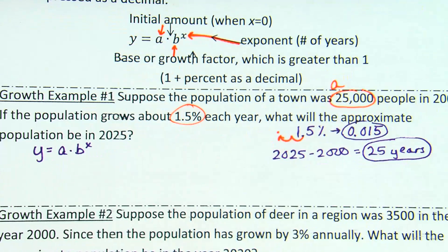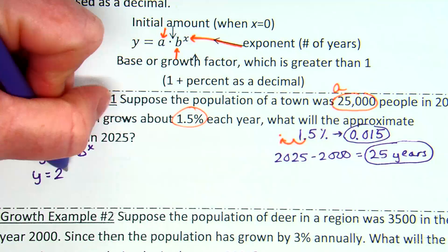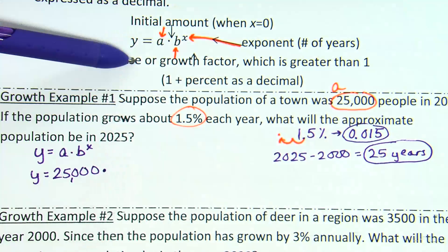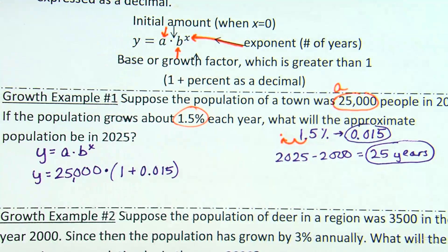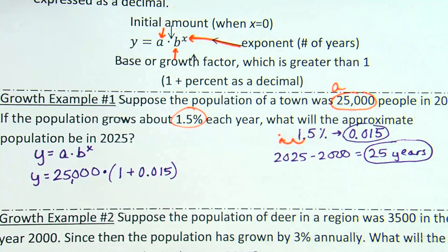Okay, so we're going to fill this in. I'm going to leave it as Y equals A, the initial amount. What did I just say A was going to be? 25,000. Then it's times B. And if you look back up here, what did it say B? Base or growth factor. Greater than 1. And it says to do 1 plus the percent as a decimal. So that means I'm going to do 1 plus, what was my percent as a decimal? Yeah, 0.015. And that's going to be raised to the power of X. And X is the exponent, which represents the number of years. And so my number of years that we're going to put in is 25.